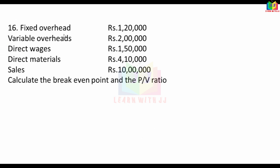It's very easy. There is a fixed overhead. Break-even point is fixed cost divided by PV ratio. First, PV ratio is contribution divided by sales. Variable overhead, direct wages, and direct material are all variable costs. Sales minus variable costs gives contribution.